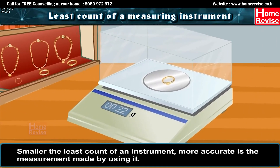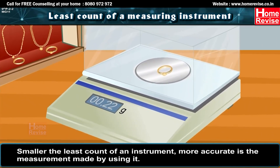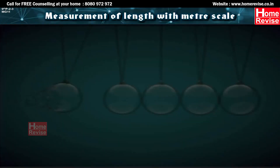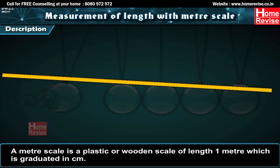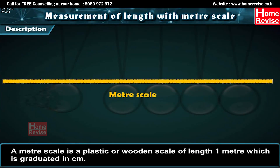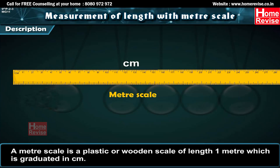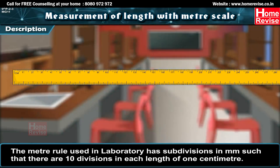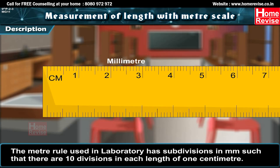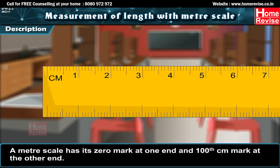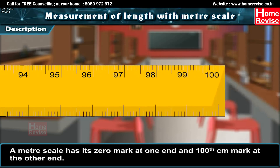Smaller the least count of an instrument, more accurate is the measurement made by using it. A meter scale is a plastic or wooden scale of length 1 meter, graduated in centimeters. The meter rule used in a laboratory has subdivisions in millimeters, with ten divisions in each centimeter. A meter scale has its 0 mark at one end and 100th centimeter mark at the other end.